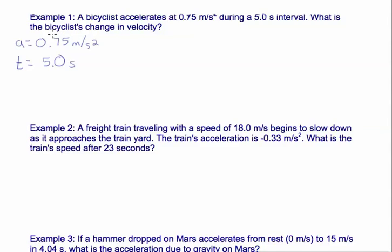And it says, what is the bicyclist's change in velocity? So this isn't solving for just V, but delta V, change in velocity. Our acceleration equation is A equals delta V over T. And we can do a magic triangle over here with A, delta V over T. So if we're solving for delta V, we get A times T.